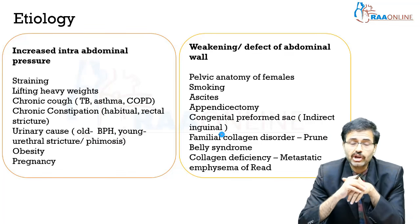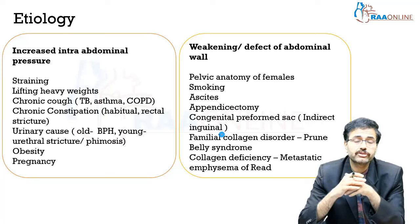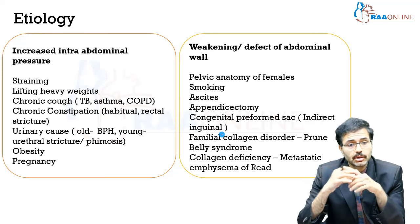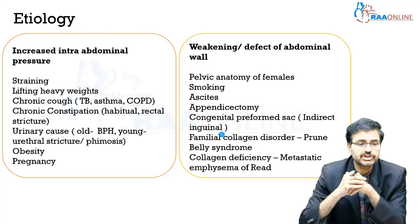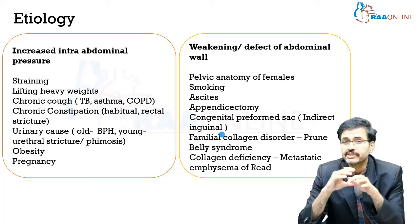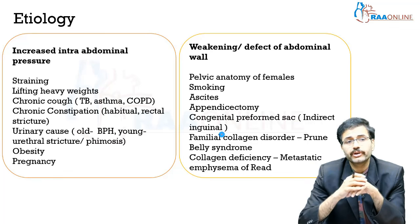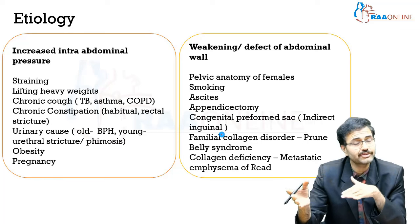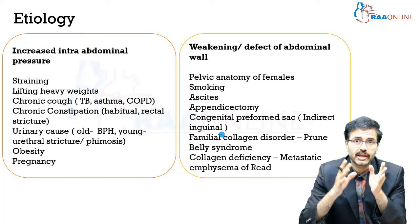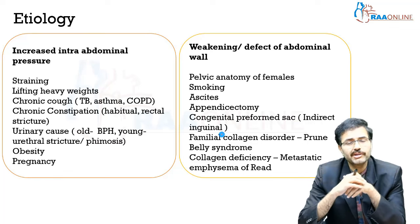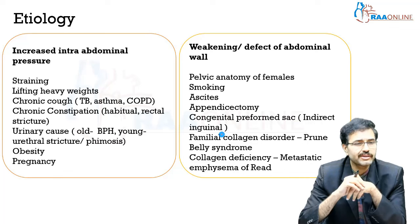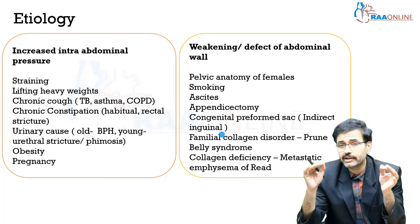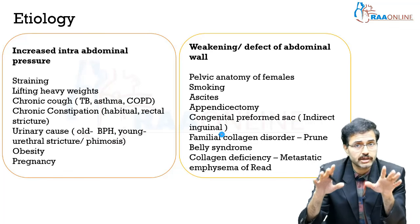A young child can also have a hernia because of raised intra-abdominal pressure, possibly because of a urethral stricture. Phimosis is an extremely rare cause for a hernia — unless it's a BXO, in which case obstruction can occur. But phimosis per se causing a hernia is very, very rare — in fact, it's essentially unheard of.